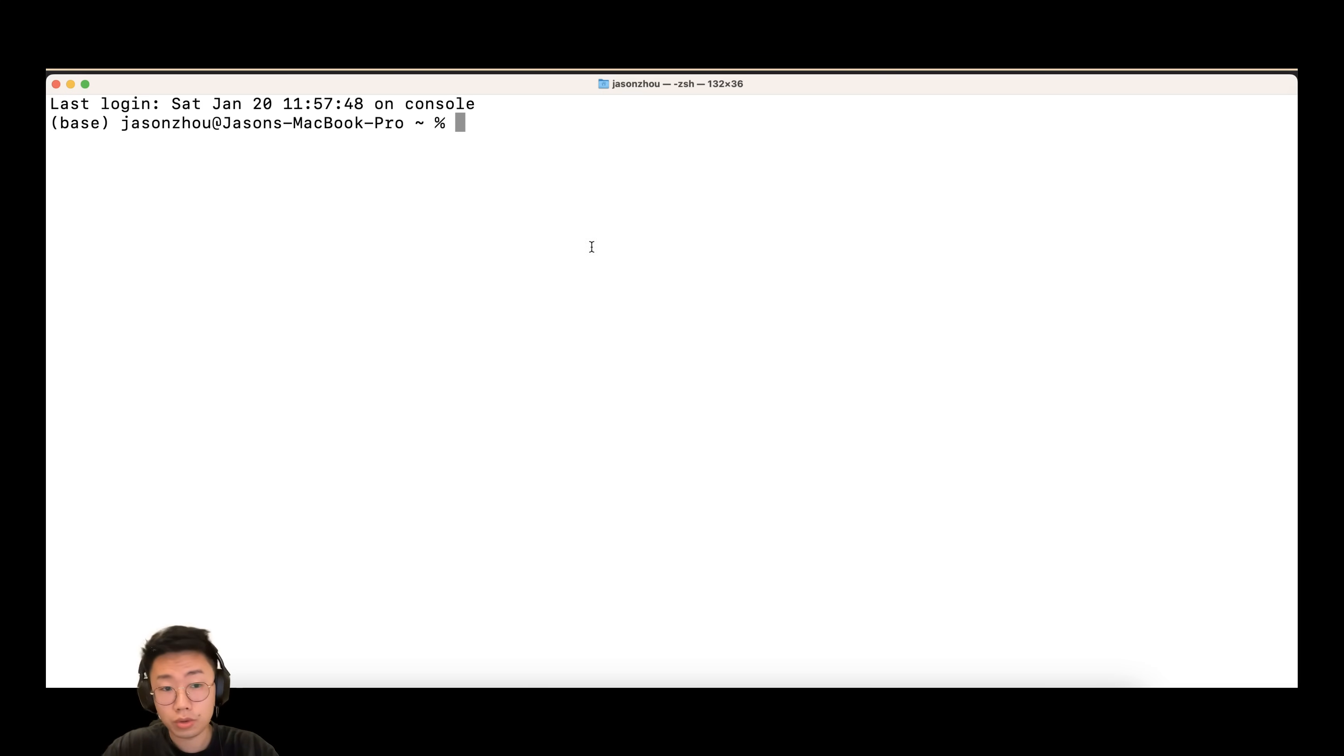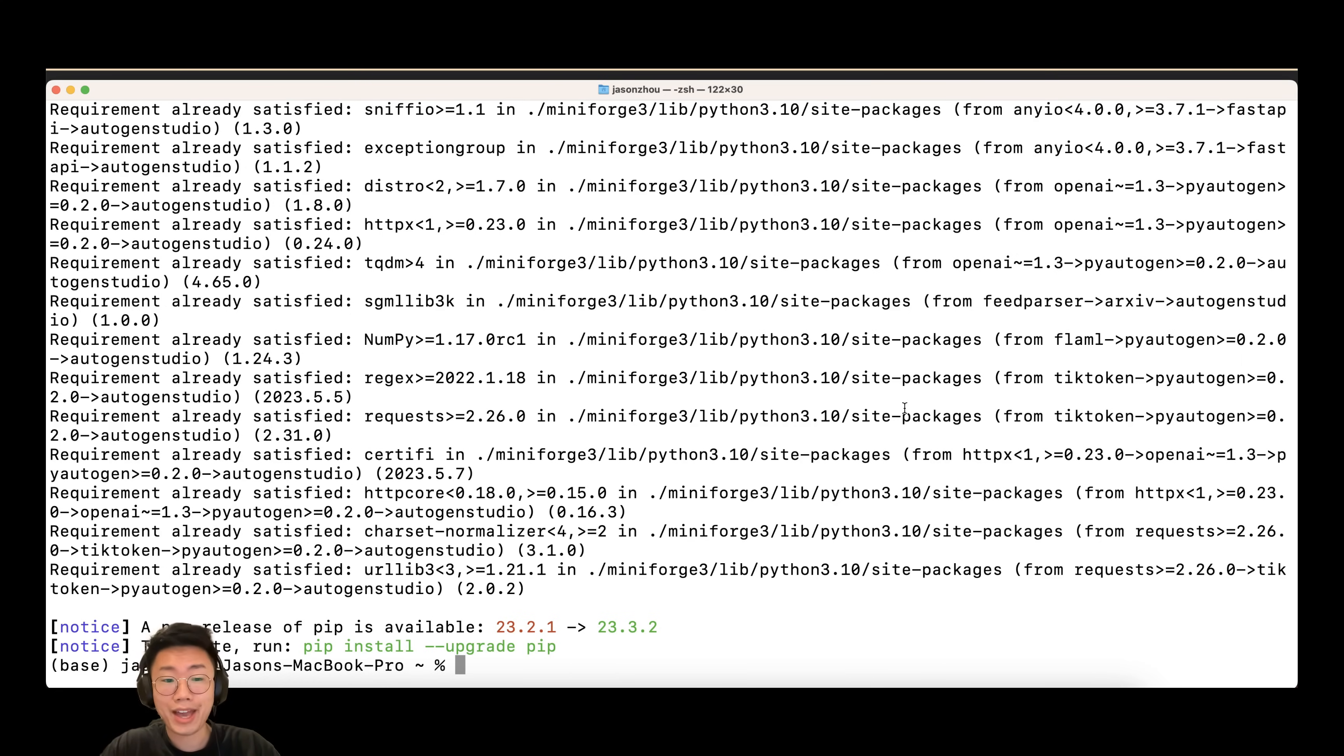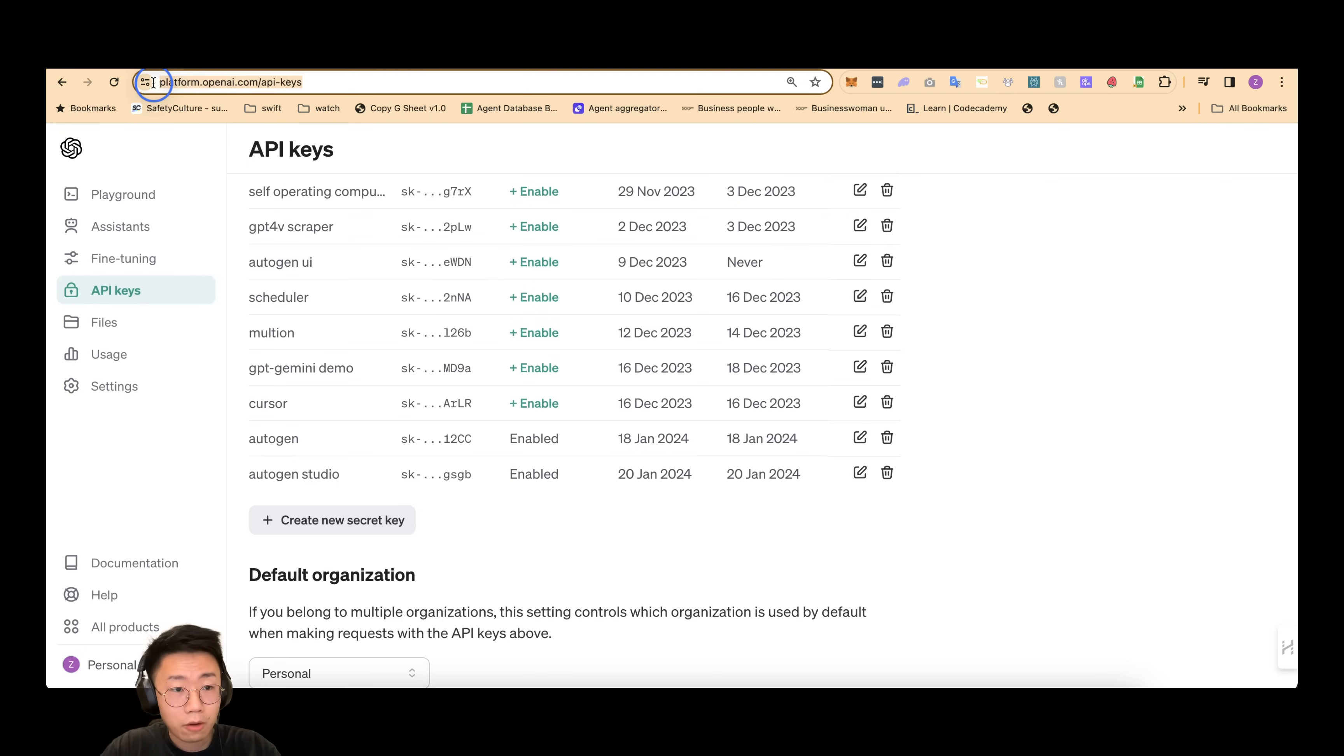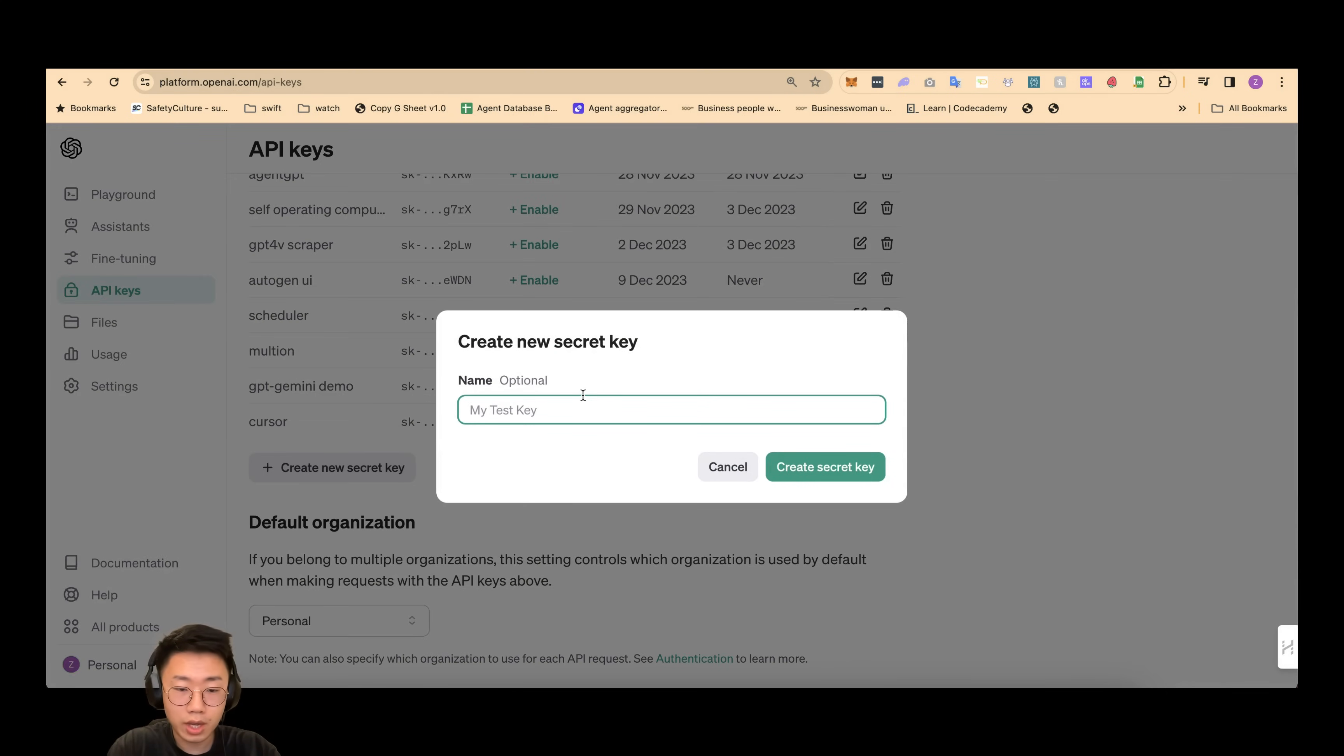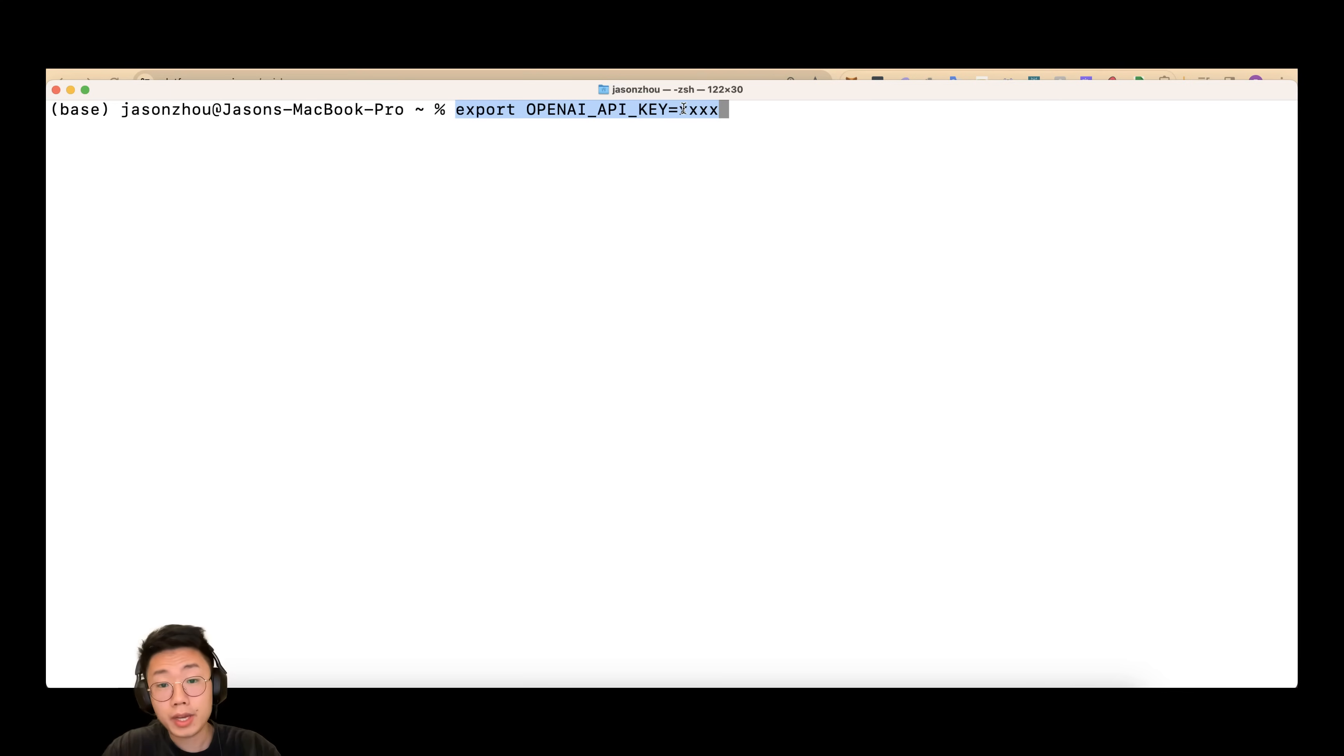To install Autogen Studio, you can just open terminal to pip install Autogen Studio. This will install the whole Autogen package as well as the front end. And once you did that, the next thing is you want to set up OpenAI API key. You can get OpenAI API key by visiting platform.openai.com/api-keys.